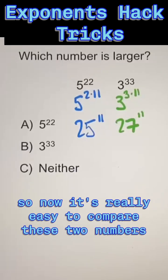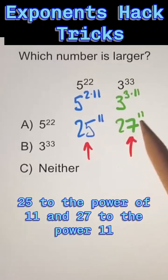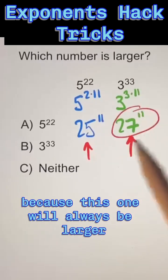So now it's really easy to compare these two numbers, 25 to the power of 11 and 27 to the power of 11, because this one will always be larger. So we can circle B.